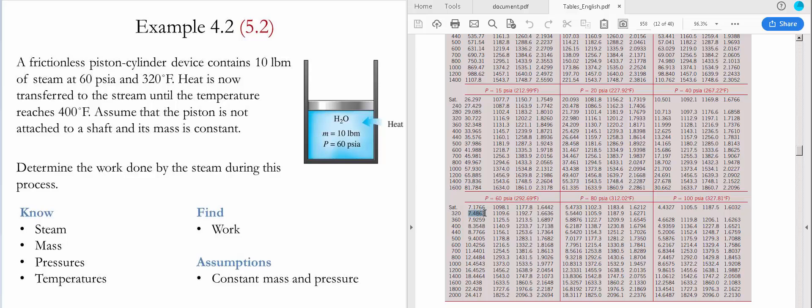The value that we get is 7.4863 feet cubed per pound mass and for 400 Fahrenheit we get 8.3548 feet cubed per pound mass.